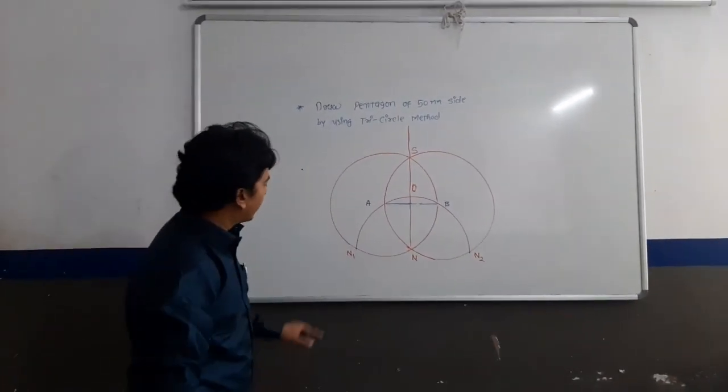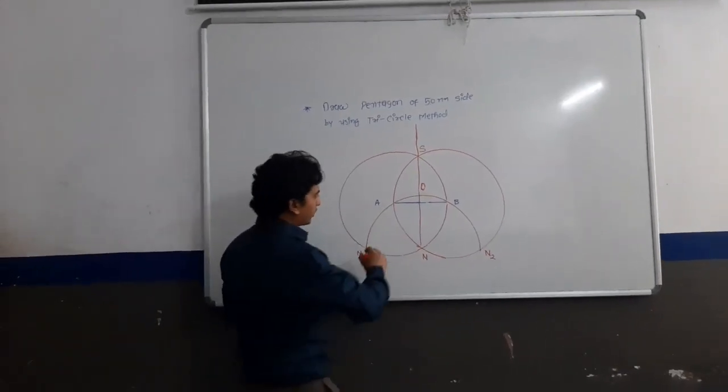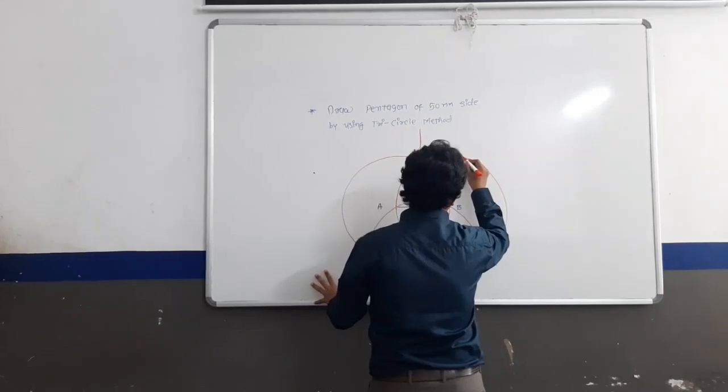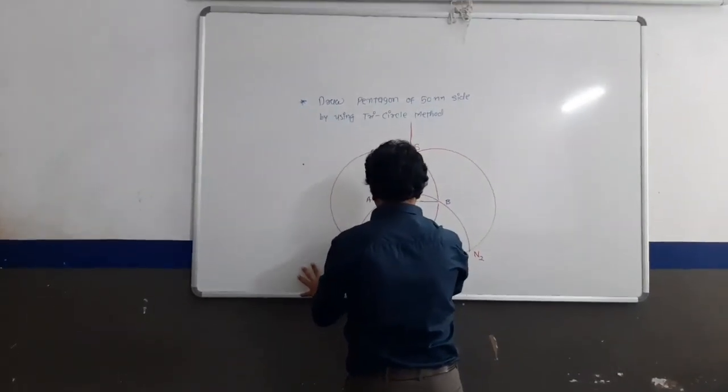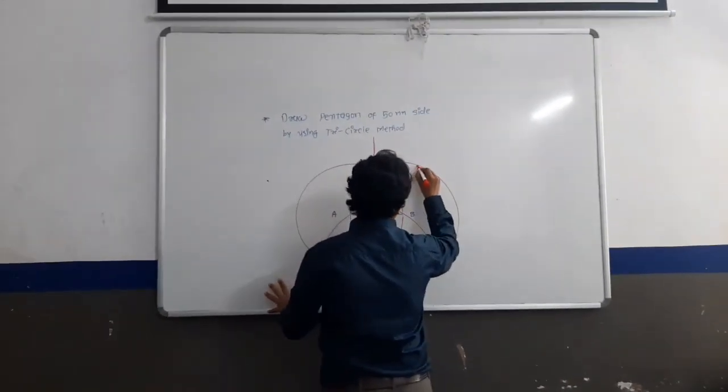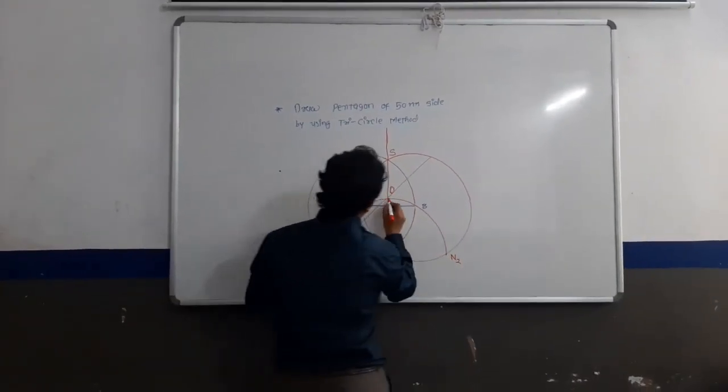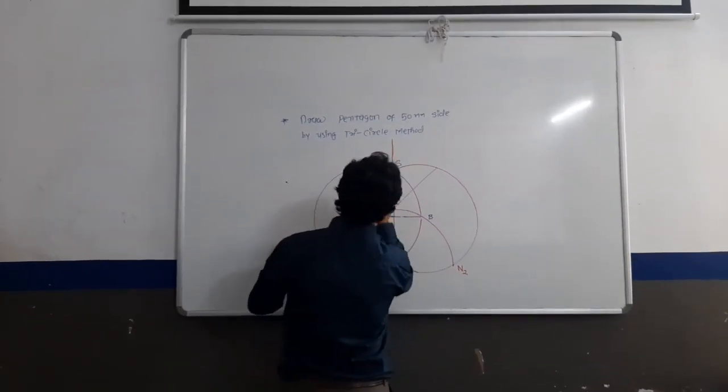N1 and O pass through a line. Similarly, N2 and O pass through a line.